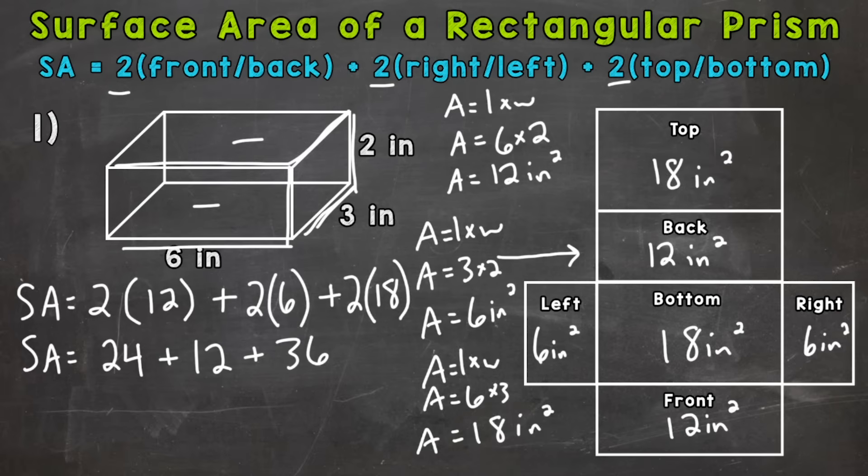or I'm sorry, the front and back combined, we have an area of 24 square inches. The right and left combined area of 12 square inches. And the top and bottom has a combined area of 36 square inches.